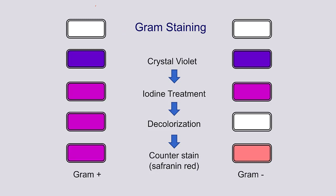Typically the bacteria would be pretty much invisible, so you need something to show up so we can see them. The first stain is crystal violet, and that results in basically the same color in both cases — you get this violet color.